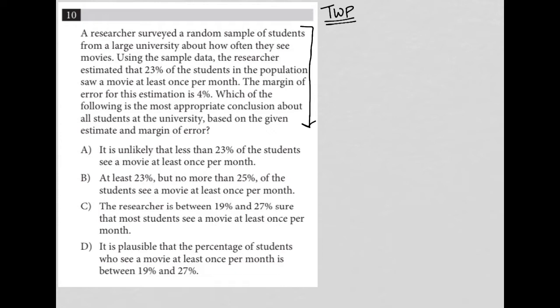So the first sentence here says, a researcher surveyed a random sample of students from a large university about how often they see movies. Okay, makes sense. We have a survey regarding movies. The next sentence says, using the sample data, the researcher estimated that 23% of the students in the population saw a movie at least once per month. All right, so 23% goes to one per month. One per month for movies.